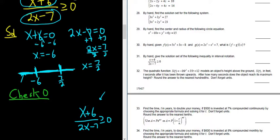So you take the 0 and you put it everywhere there's an x. So 0 plus 6 over 2 times 0 minus 7, and that's greater than or equal to 0. So negative 6 over 7, greater than or equal to 0. That's not true. So we don't shade. We pick 0 from here.